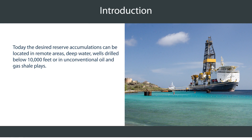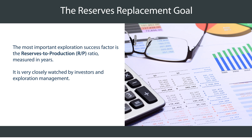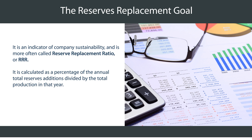Today, the desired reserve accumulations can be located in remote areas, deep water, wells drilled below 10,000 feet, or in unconventional oil and gas shale plays. The most important exploration success factor is the reserves-to-production, or R/P ratio, measured in years. It is very closely watched by investors and exploration management. It is an indicator of company sustainability and is more often called the reserve replacement ratio, or RRR. It is calculated as a percentage of the annual total reserves additions divided by the total production in that year.